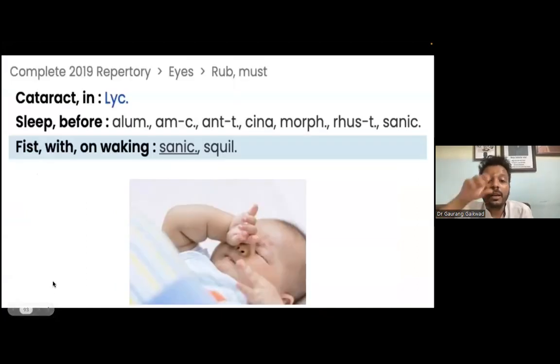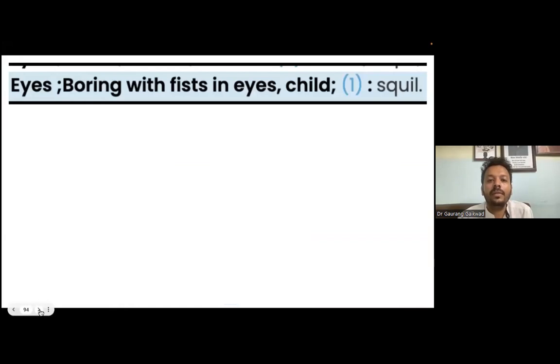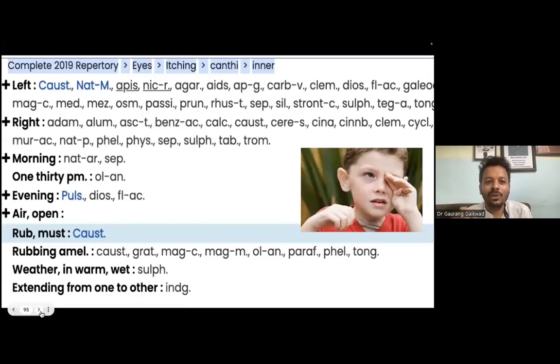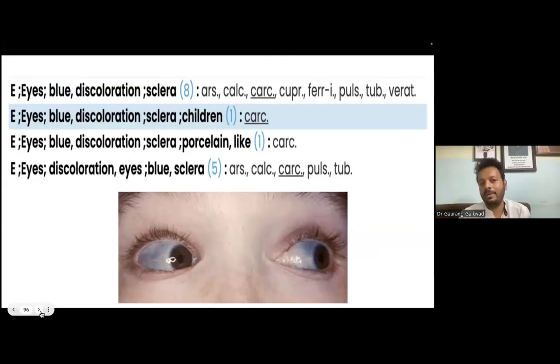Some children get up and are constantly rubbing like that with the wrist. Squilla. The Squilla child will come in your clinic and constantly rub like this. If a child comes in your clinic and for almost 10 or 15 minutes is constantly rubbing like this, the first remedy that comes to your mind should be Squilla. Everything I tell you is with solid clinical data, total clinical materia medica in general.